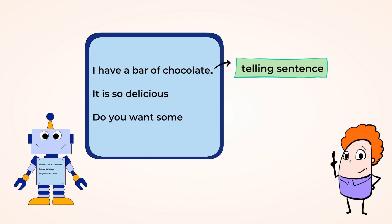Now the next sentence is, it is so delicious. And the robot wants to say that with a loud voice to show that it is very happy. So should we add a question mark or an exclamation point to the end of the sentence? That's right, an exclamation point.